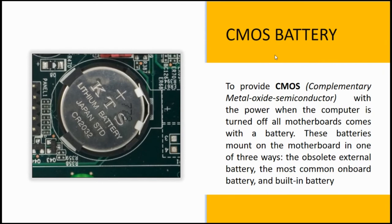The next is the CMOS battery. CMOS stands for Complementary Metal Oxide Semiconductor. It is also called the memory battery, clock battery, or real-time clock. It is generally a CR2032 lithium coin cell. The lifespan of the CMOS battery is estimated to be 3 years when the power supply unit is unplugged or switched off.